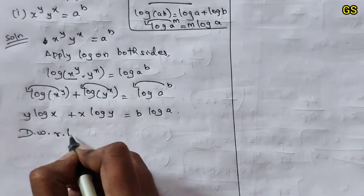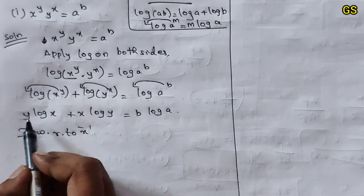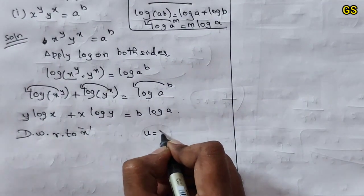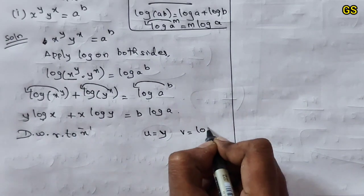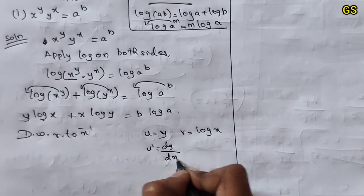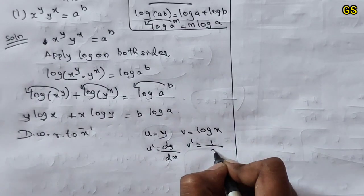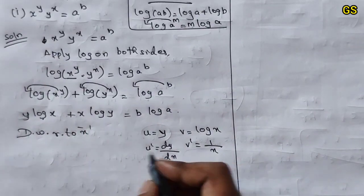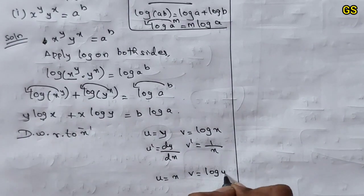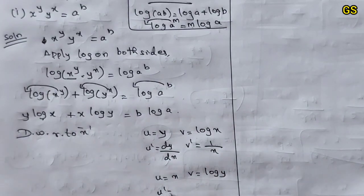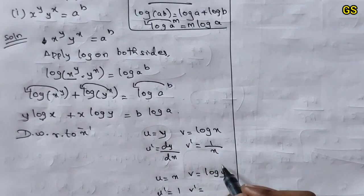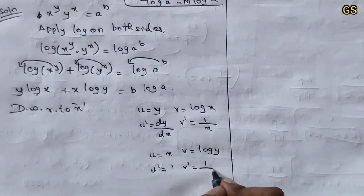Differentiate with respect to x. It has one variable, so use product rule. u equals y, v equals log x. u dash: differentiate y gives dy/dx. v dash: differentiate log x gives 1/x. For the second term: u equals x, v equals log y. u dash is 1, v dash is 1/y.